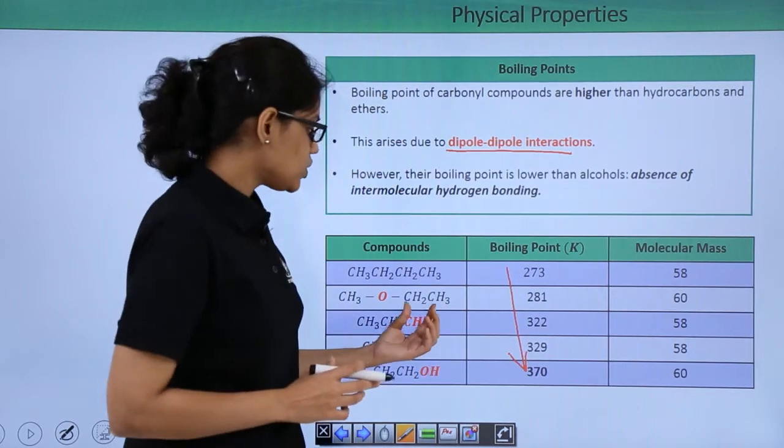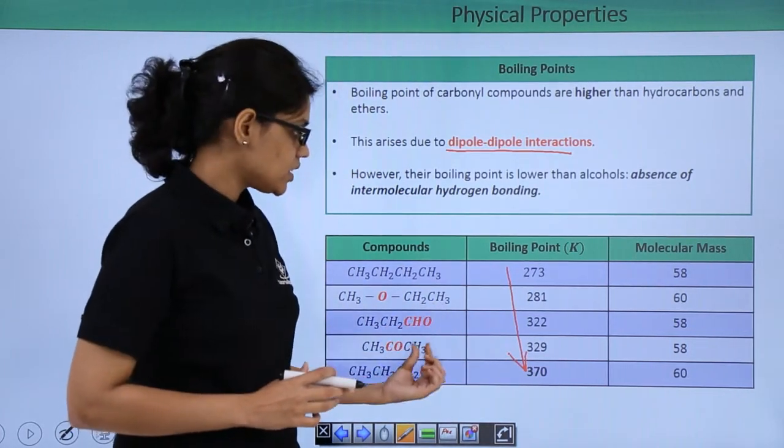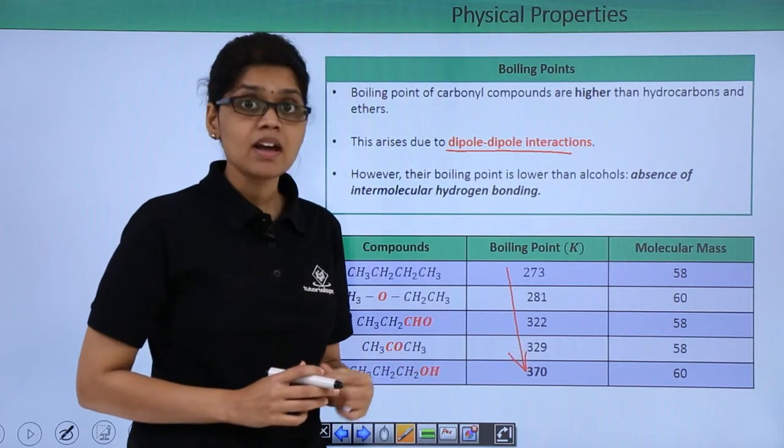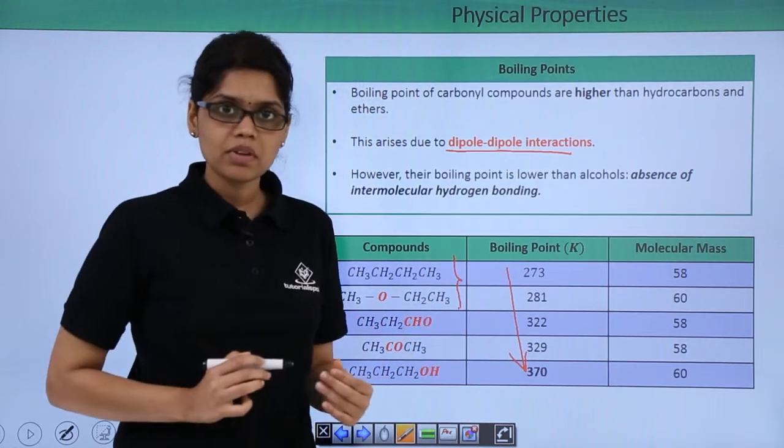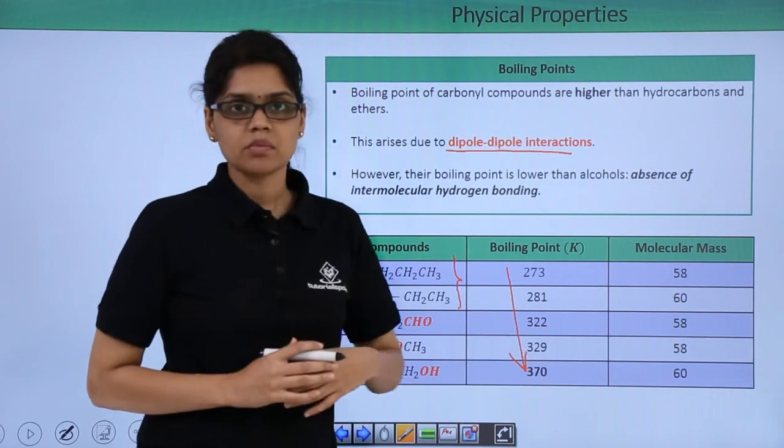You can see that if you look at the carbonyl compounds aldehydes and ketones they have similar boiling point and have higher boiling point as compared to ethers and hydrocarbons and have lower boiling point as compared to alcohol.